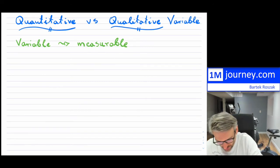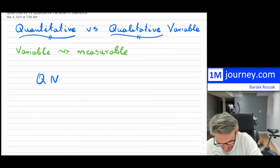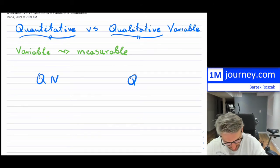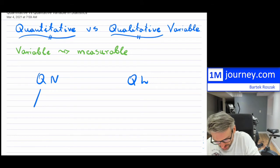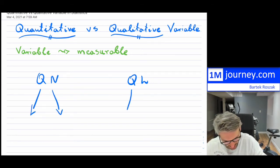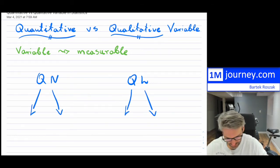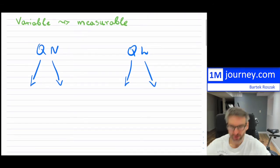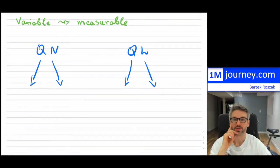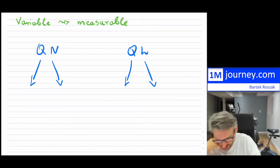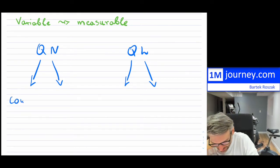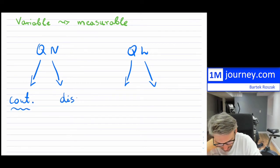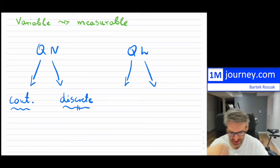For quantitative variables, there are two distinguishing features. When you have a quantity we can measure, there are actually two things that can happen: it can be continuous, or it can be discrete. What is the difference between continuous and discrete?